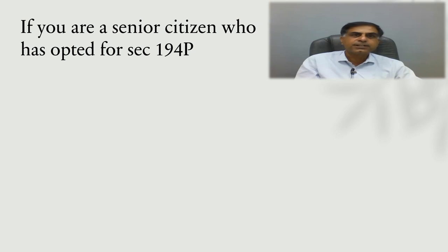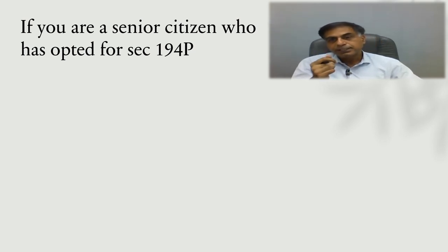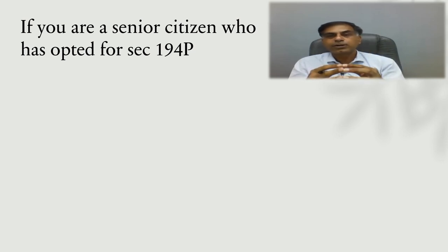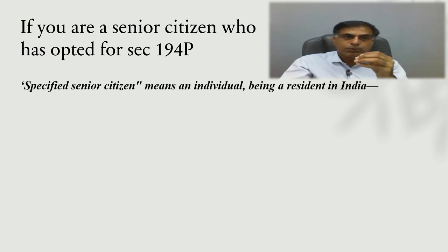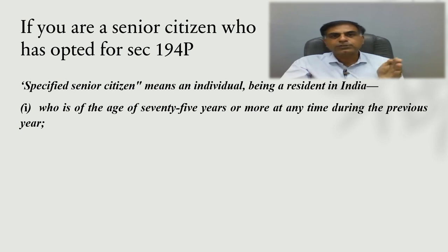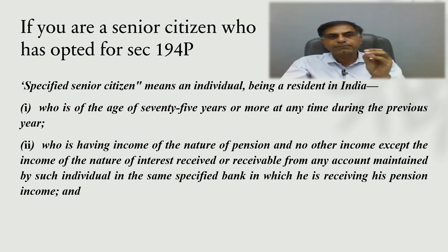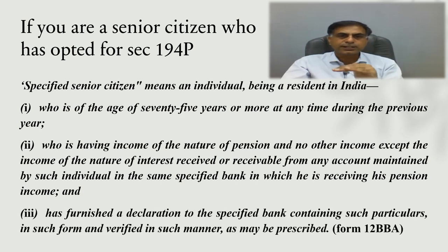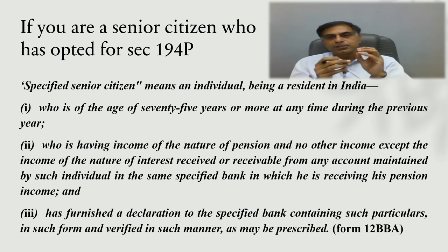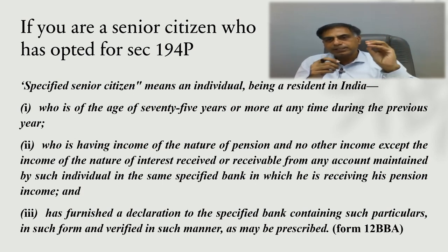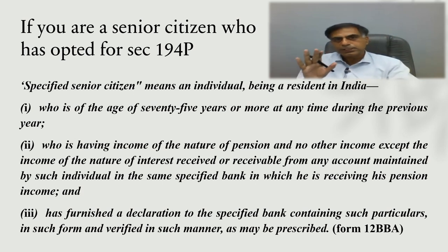One more category: if you are a senior citizen who has opted for Section 194P — introduced by Finance Act 2021, with assessment year 22-23 being the first year — the government has given an option to specified senior citizens aged 75 years or more, having only pension income and interest income from the same specified bank, to furnish a declaration in Form 12BBA to that bank. The bank then deducts and deposits all due tax, and such senior citizens are exempted from filing ITR.